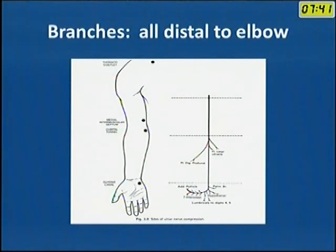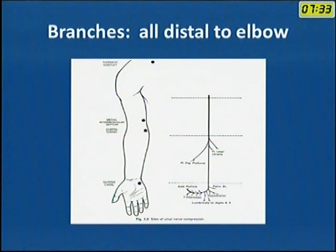In a nutshell: it starts from the medial cord of the brachial plexus, goes behind the medial epicondyle, comes to the wrist, goes in front of the flexor retinaculum, and through Guyon's canal it gives branches.